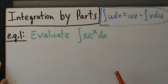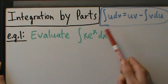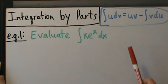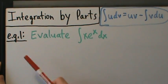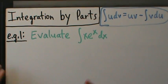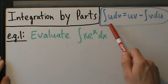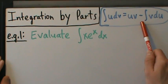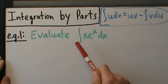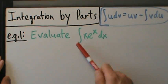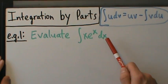Here's example one with integration by parts. In the last video, we talked about where this formula comes from. Now we're going to talk about how to use it through an example. The integration by parts formula says: the integral of u dv equals uv minus the integral of v du. To use it, we just have to think of our integral as the integral of u dv.